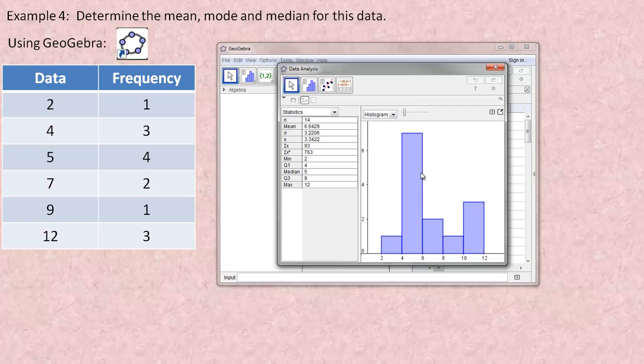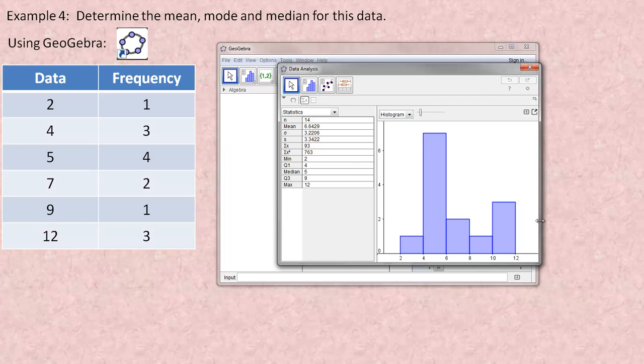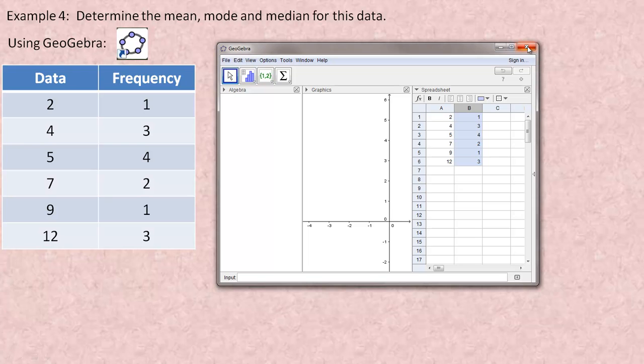There are other options here too if you want to see just a histogram of this data. This changes the number of bins. Notice there's six bins. You can actually alter that. That's some of the options that you have. This lesson isn't about box and whisker plots, but you actually have that option as well, box plot.